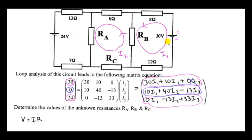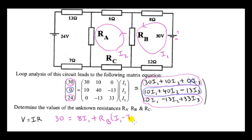Let's go back to this loop. The voltage source is 30. Let's calculate the voltage drops. The current flows through an 8-ohm resistance, so we multiply 8 by I1 — resistance times current by Ohm's law gives the voltage drop. Only current I1 flows through that wire. But in this wire, I1 flows through it and I2 also flows through it but in the opposite direction. The combined current is I1 minus I2, and the resistance is Rb, which we have to determine. So we multiply Rb by I1 minus I2. Moving on, only current I1 flows through the 12-ohm resistor, so we multiply 12 by I1.